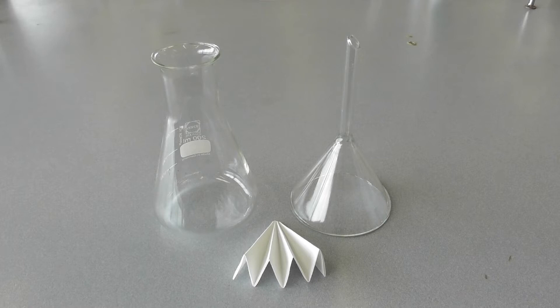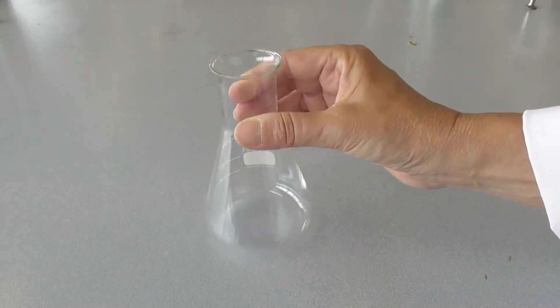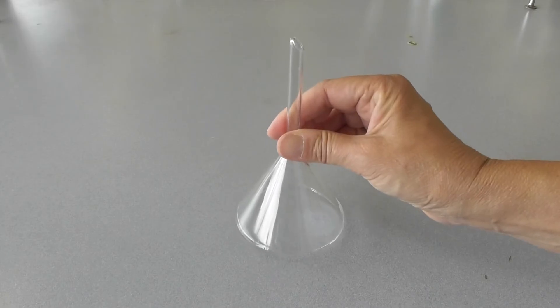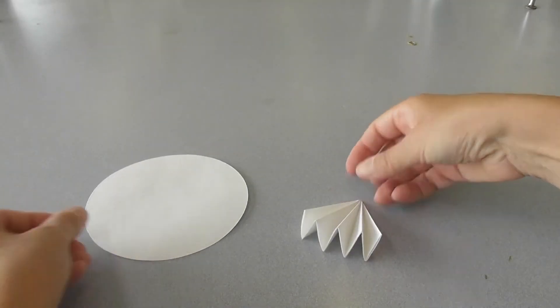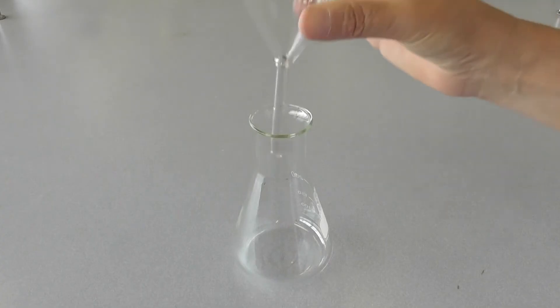Setup is simple, requiring only a conical flask, a funnel and a piece of filter paper. Place the funnel into the mouth of the flask.